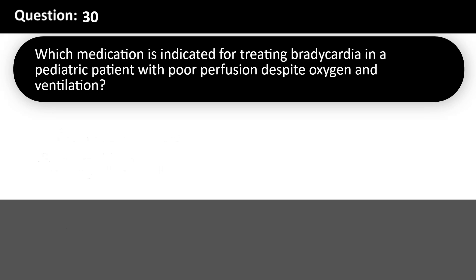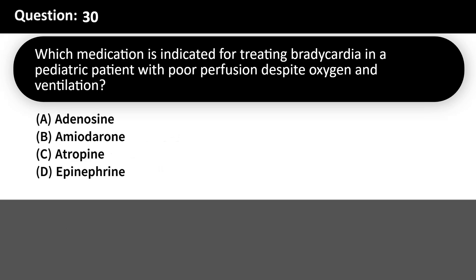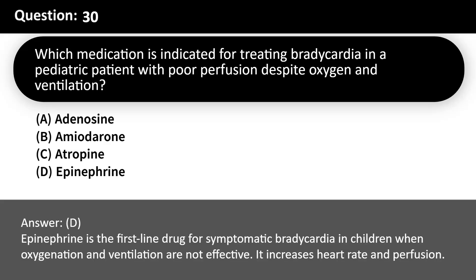Which medication is indicated for treating bradycardia in a pediatric patient with poor perfusion despite oxygen and ventilation? A. Adenosine. B. Amiodarone. C. Atropine. D. Epinephrine. Answer: D. Epinephrine is the first-line drug for symptomatic bradycardia in children when oxygenation and ventilation are not effective; it increases heart rate and perfusion.